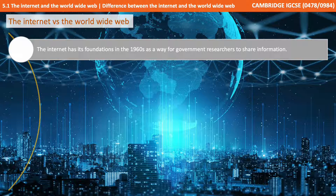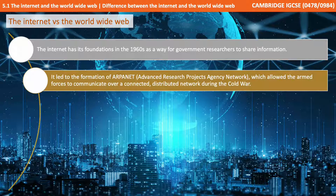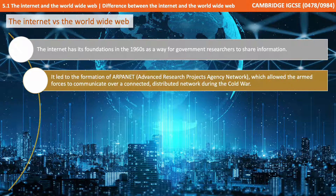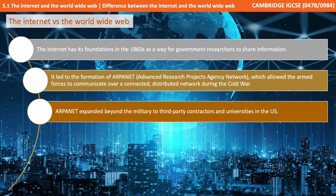The Internet has its foundations way back in the 1960s as a way for government researchers initially to share information. This led to the formation of what was known as ARPANET, the Advanced Research Project Agency Network, as a way to allow armed forces to communicate over a connected, distributed network during the Cold War. ARPANET then expanded to connect beyond the military and started to connect third-party contractors and universities in the US.